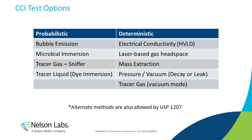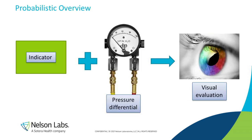The probabilistic methods work like this: there's some kind of an indicator — whether it's air, dye, microbes, or a gas — and then we create a pressure differential using either a vacuum or pressure. This indicator moves through any defects, and then we do some kind of evaluation, usually visual: do I see bubbles? Is there dye inside the container? Is there microbial growth in a previously clear media? This tells us if the result is a pass or a fail.